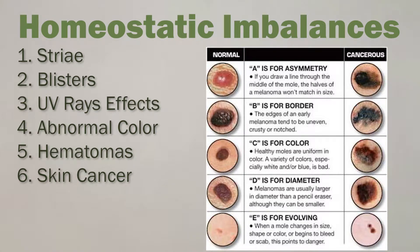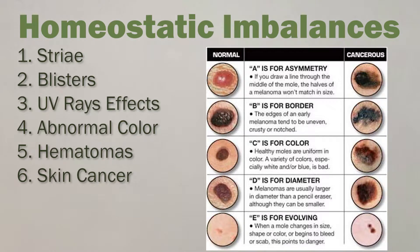A is for asymmetry — if something like a mole or spot is not exactly the same on both sides. B is border irregularity. C is color — if it looks dark, purple, or blue, just not normal. D is diameter — does it get bigger in size? And sometimes E is elevation — it can even rise up out of your skin a little bit bigger than normal. Pay attention and follow up with a dermatologist.